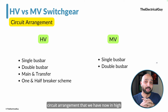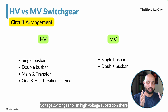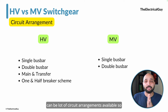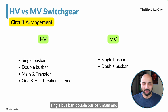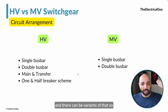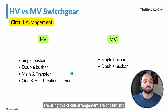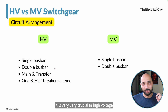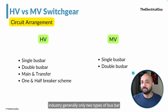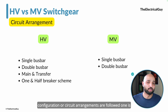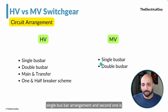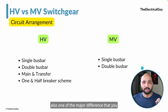Let's talk about the different circuit arrangements. In high voltage substations there can be many circuit arrangements: single busbar, double busbar, main and transfer busbar, one-and-a-half breaker scheme, and variants of those. These are very crucial in the high voltage industry. But in medium voltage, generally only two types of busbar configurations are followed: single busbar arrangement and double busbar arrangement.